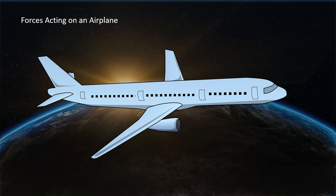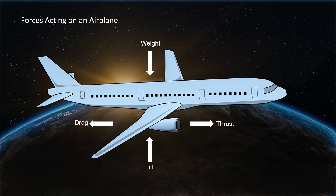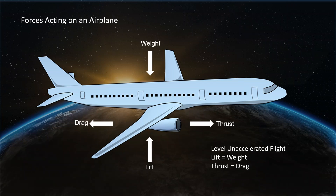There are four forces that act on an airplane. First there's the weight of the plane. Counteracting that is the lift provided by the wings. Thrust comes from the engines and drag is the air resistance caused mostly by the lift but somewhat by some of the parts and pieces hanging off the airplane. To be in level flight we need two things to be true: lift needs to equal weight, and thrust needs to equal drag. If lift is greater than weight the plane climbs; if lift is less than weight the plane descends. If thrust is less than drag the plane decelerates; if thrust is more than drag it accelerates. So as long as lift equals weight and thrust equals drag, the plane will be in level unaccelerated flight.